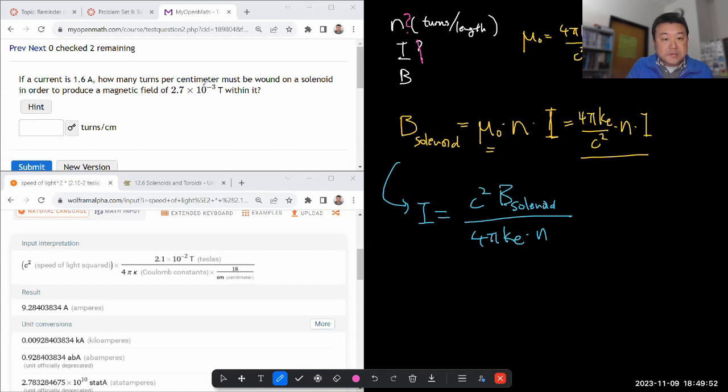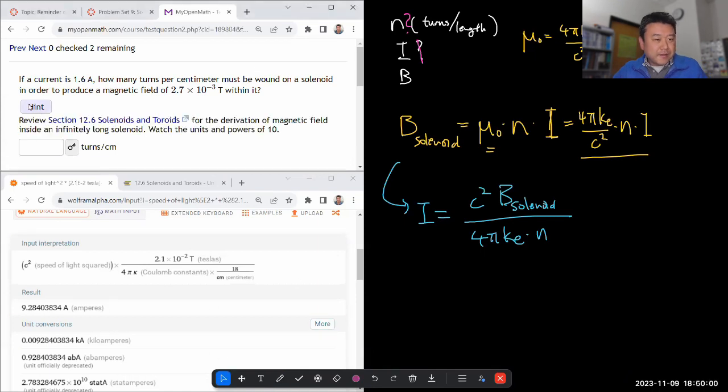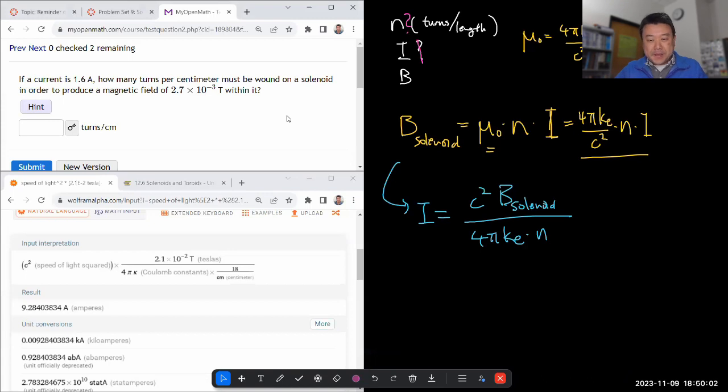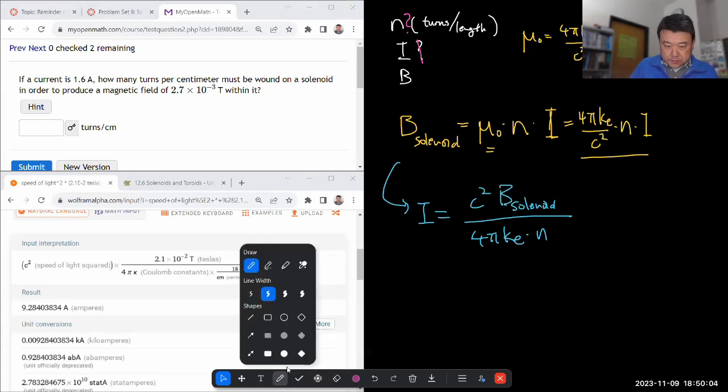Must be wound on a solenoid in order to produce... Okay. I'm pretty sure the hint here is identical. It'll just tell it, oh look at the formula. So let me close this out.